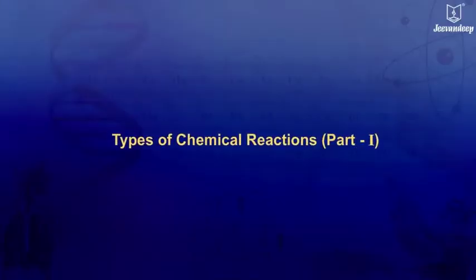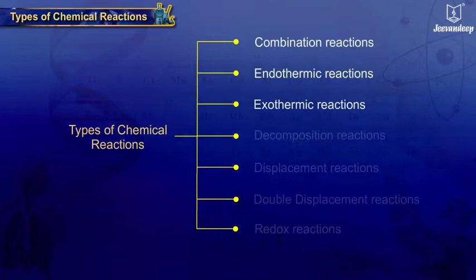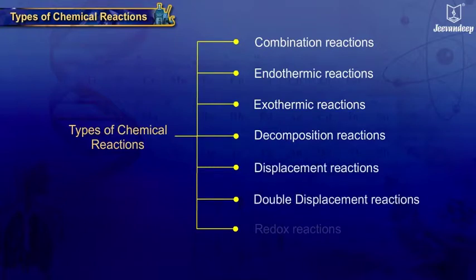Types of Chemical Reactions Part 1. The types covered include: Combination Reactions, Endothermic Reactions, Exothermic Reactions, Decomposition Reactions, Displacement Reactions, Double Displacement Reactions, and Redox Reactions.